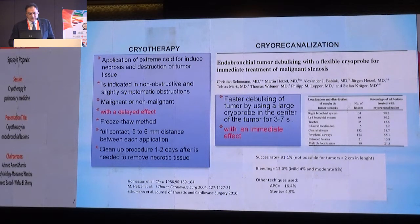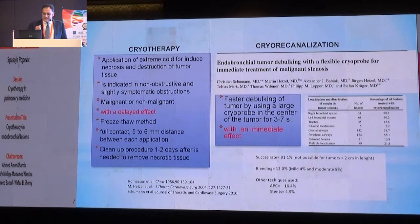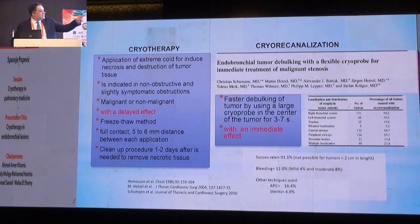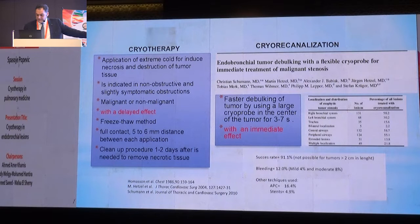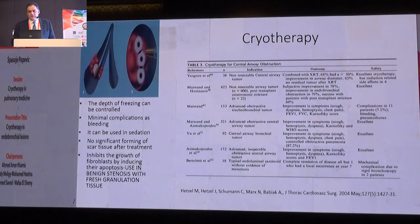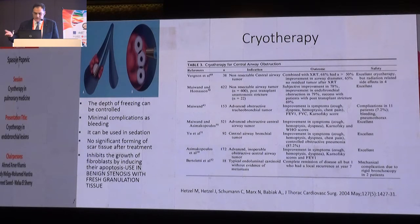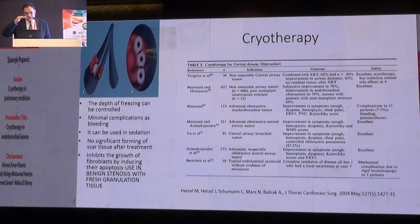Cryorecanalization is another way of using the cryoprobe as an immediate disobstructive technique, but it can lead to some dangers. You debulk the tumor by freezing it to the center of the tumor for three to seven seconds, depending on the diameter of the probe, then immediately remove the tumor. In this study, success rate was over 90%, and bleeding was around 12%, with other techniques like argon plasma coagulation used to stop bleeding. I would be very cautious doing this in tumors with a base broader than two centimeters, because of the risk of airway wall perforation, unless the tumor is on the cartilaginous wall.